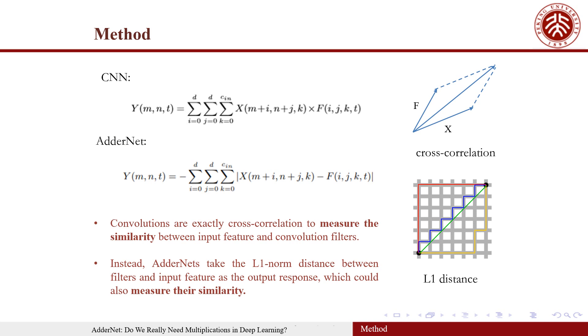Taking the figure as an example, the convolution operation is to calculate the inner product for two vectors, the input patch and its corresponding filters. In fact, there are many other metrics to measure the distance between filter and the input feature.